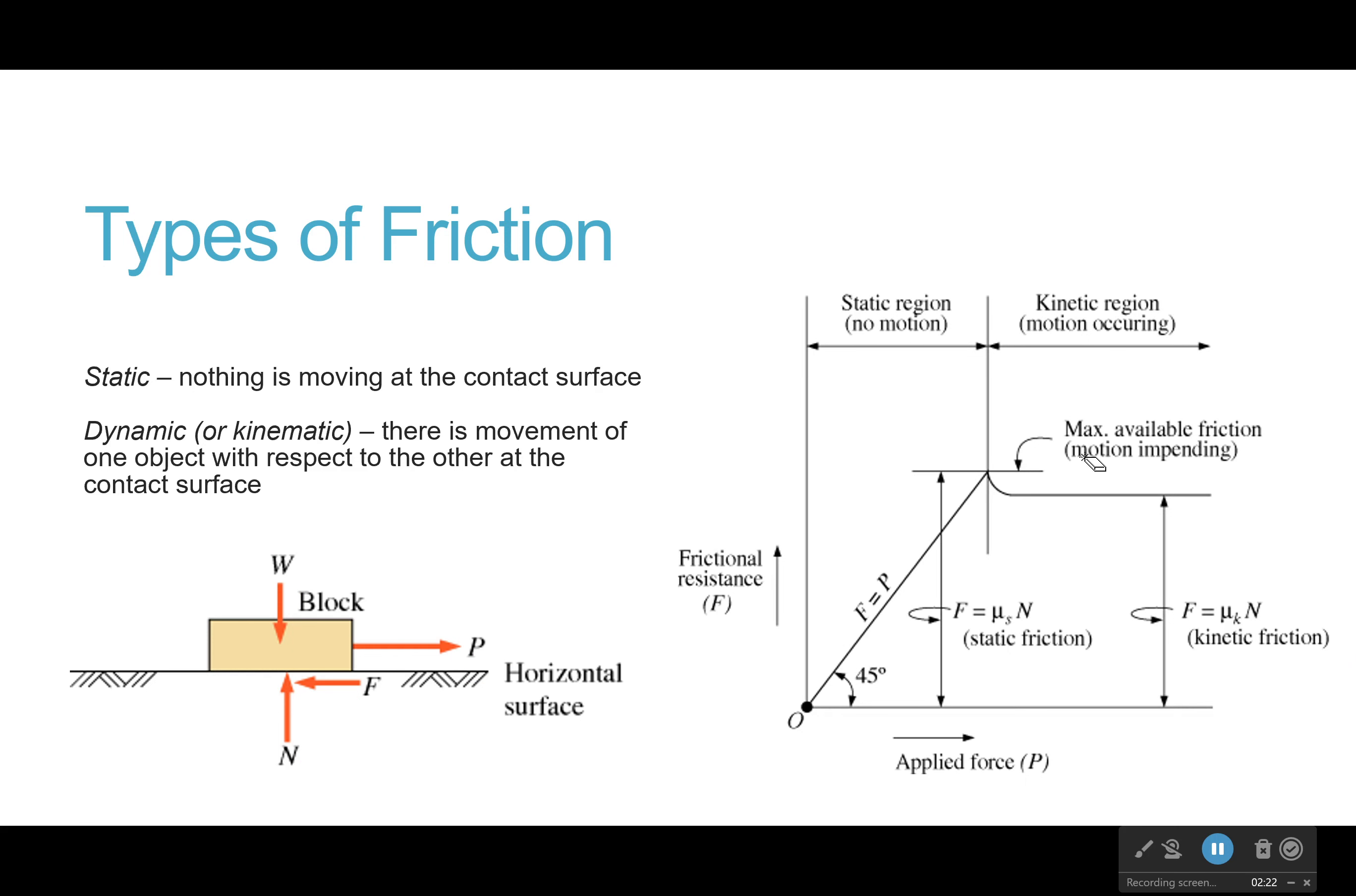Now, what does it show us? Well, before motion, your frictional resistance, the force it applies, is always equal to the force you're applying. Always equal to it. Now, I know I say it's greater than, but it's just, it's always matching you. However, eventually, you reach a point where it's too much. You have applied enough force that you have broken past friction defenses. And at this point, this is as much force as friction can give you.